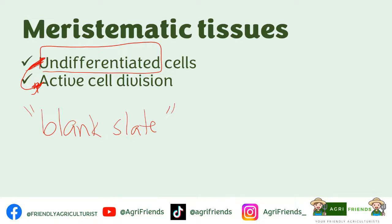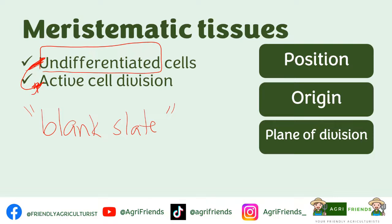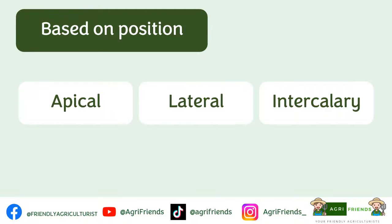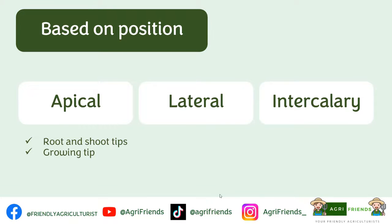There are types of meristematic tissues based on their position, origin, and plane of division. Based on position or location, it can be classified into the apical, lateral, and intercalary meristems. When we say apical meristem, from the apex, meaning they are found in the tip portions — they are situated at the tip. They give rise to the primary meristem or the site of primary growth. Examples are the root and shoot tips — they are the growing tips.